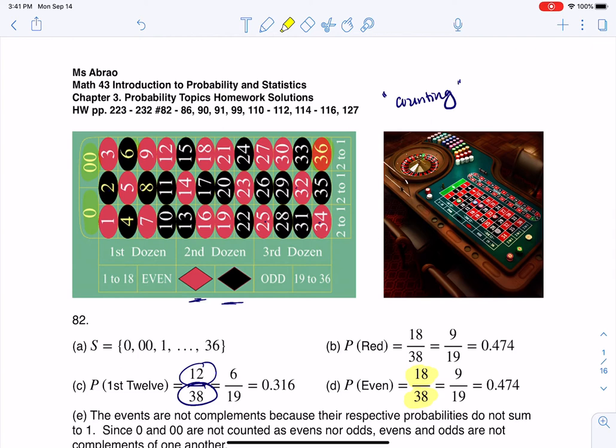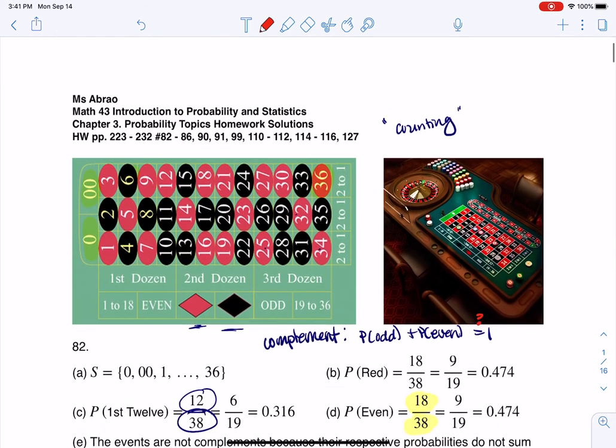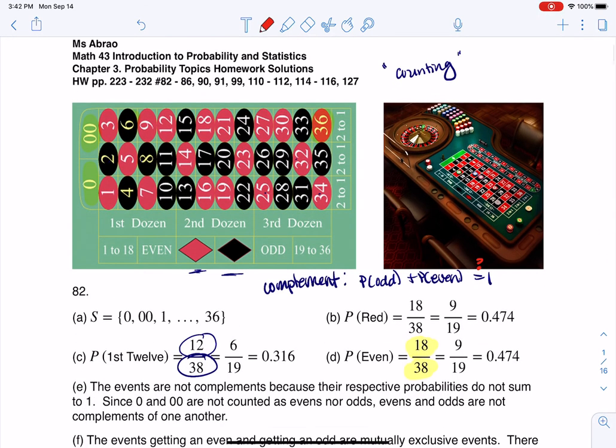And then part E says, is getting an odd number the complement of getting an even number? And this idea of complement. If two events are complementary, then the probability of getting an odd plus the probability of getting an even would equal one. That's what it means to be complementary. Now, I'm going to put a little question mark over that. I don't know if this is true, but that's what it means to be complementary, that two events, their probabilities would sum to one.